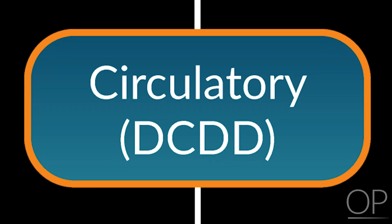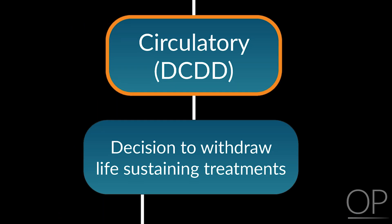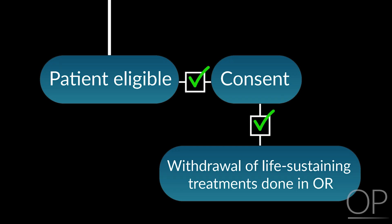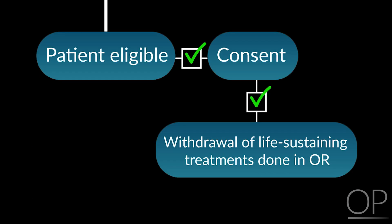In DCDD, a family and the medical team have made a decision together at the end of a child's life that life-sustaining treatments, including a ventilator, will be withdrawn. If the patient is medically eligible and likely to die within 60 minutes of discontinuing the ventilator, the family is approached for consent. If they consent, the medical team and the family will go with the patient to the operating room for the withdrawal of the ventilator and any cardiac support.